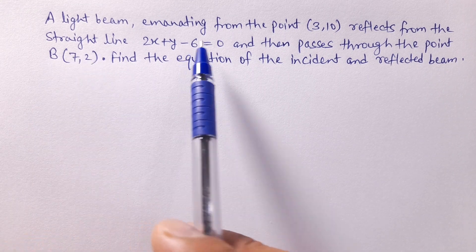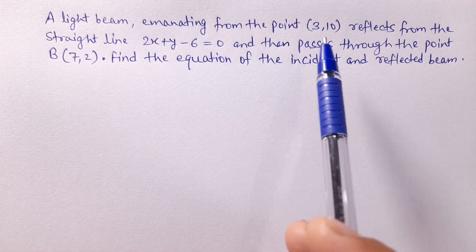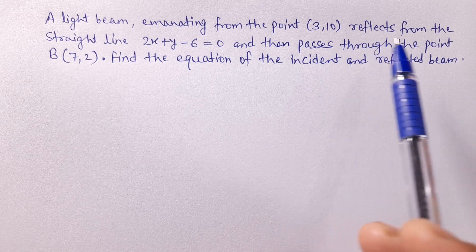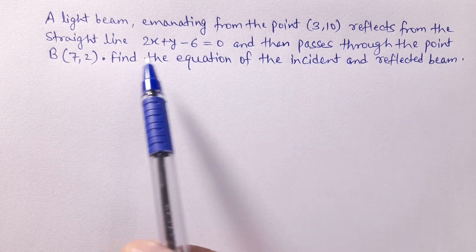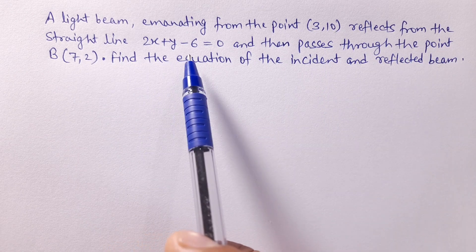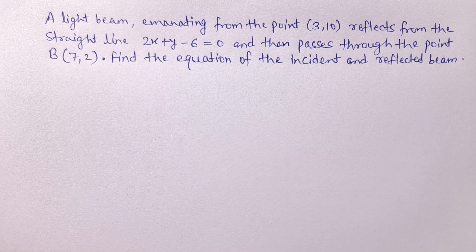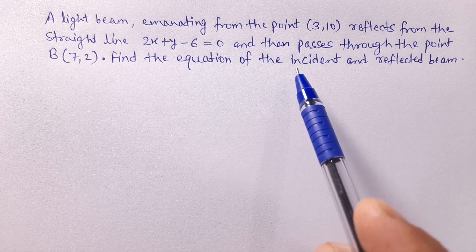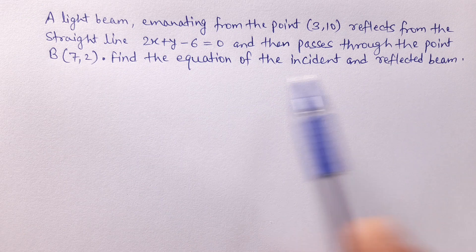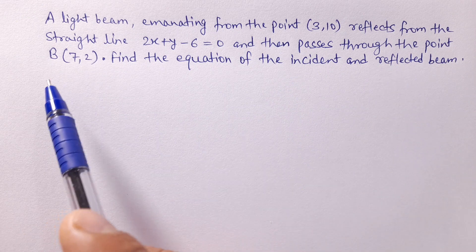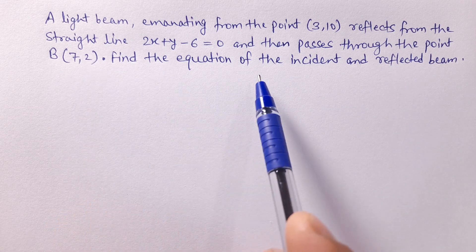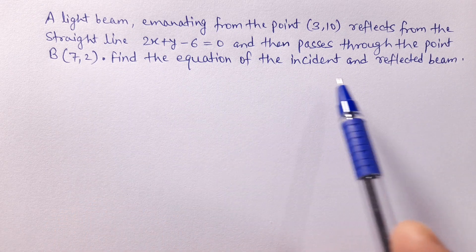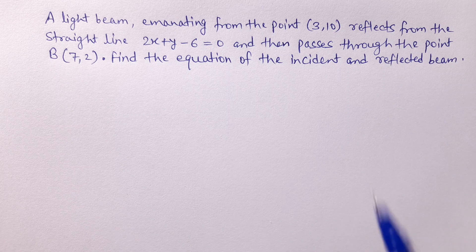A light beam emanating from the point A(3,10) reflects from the straight line 2x + y - 6 = 0 and then passes through the point B(7,2). Find the equation of the incident and reflected beam.